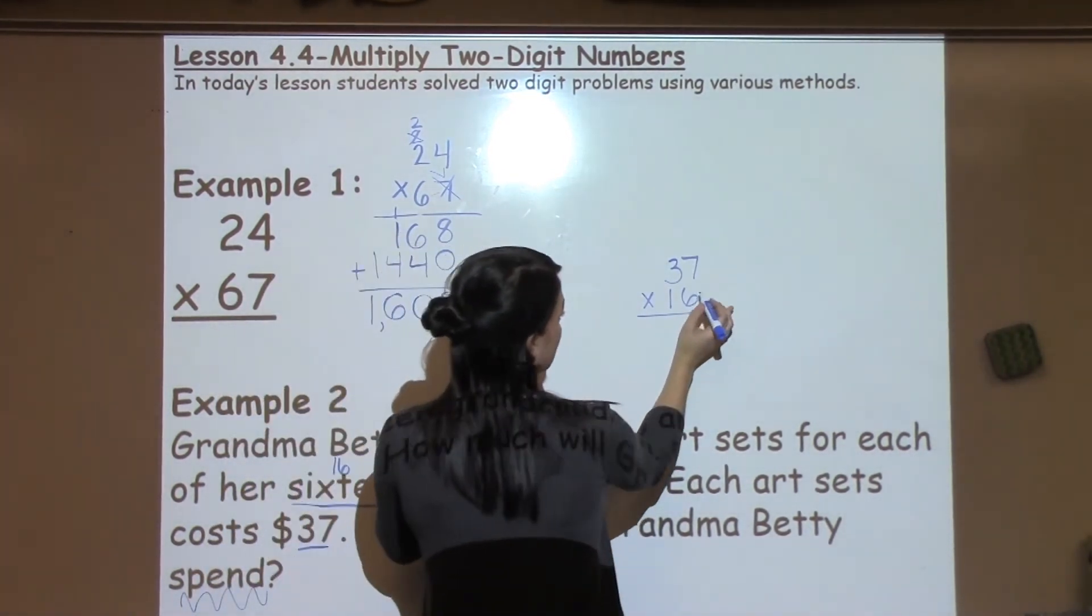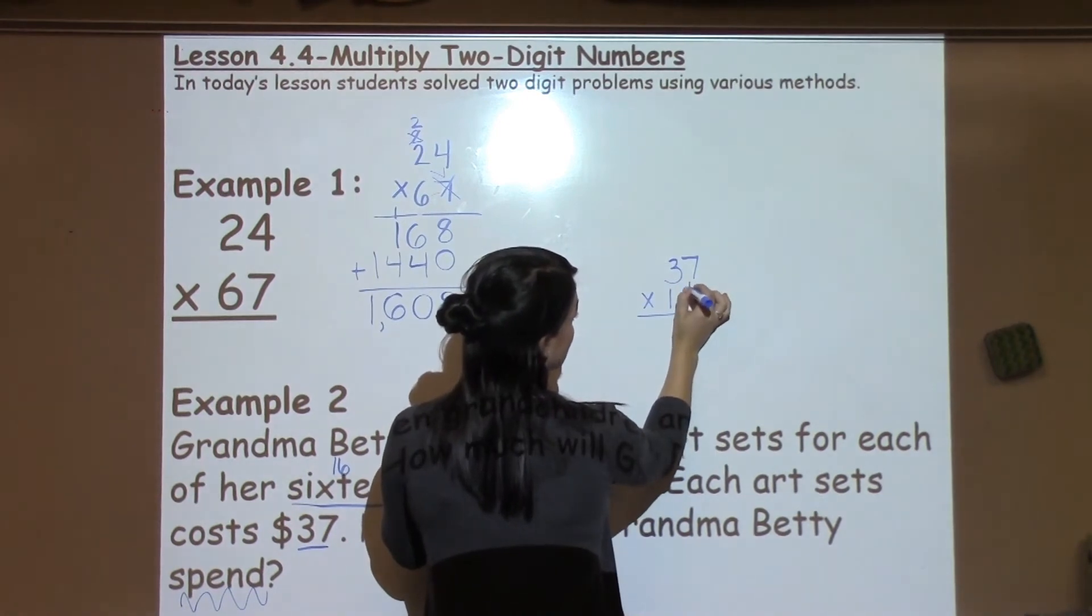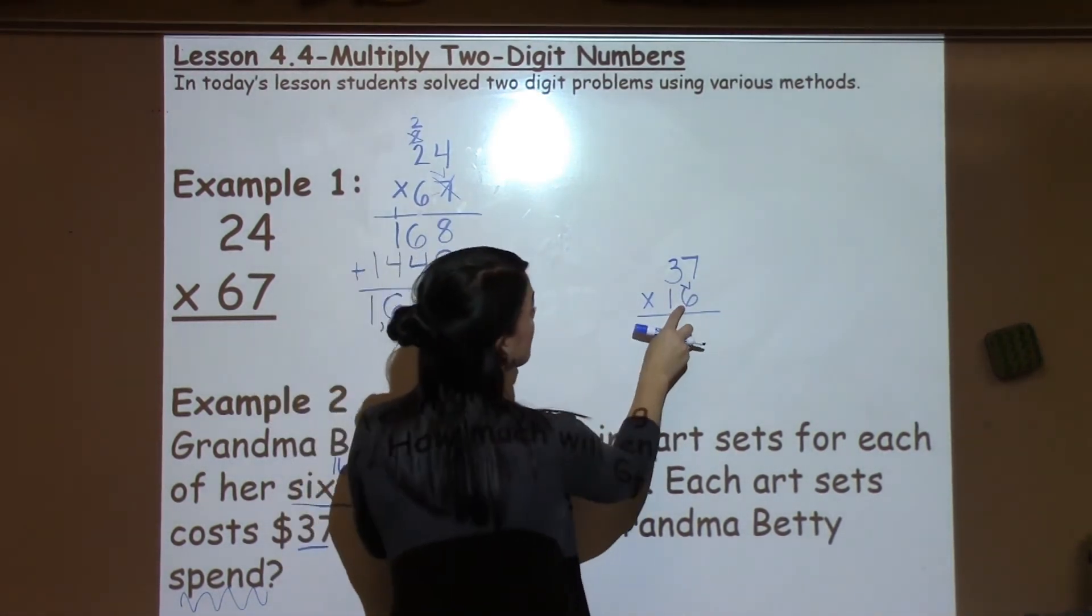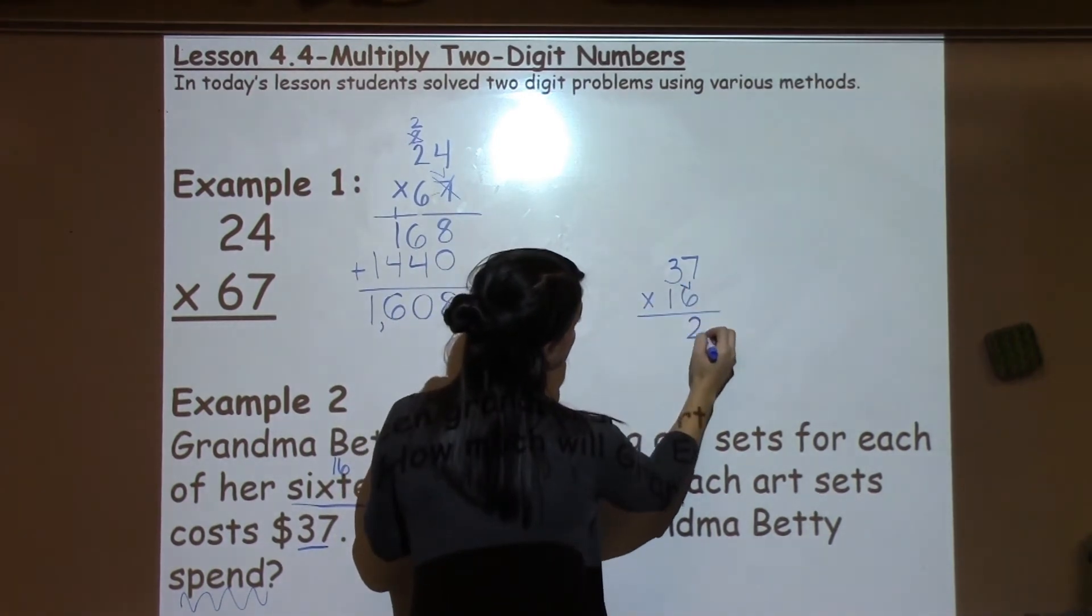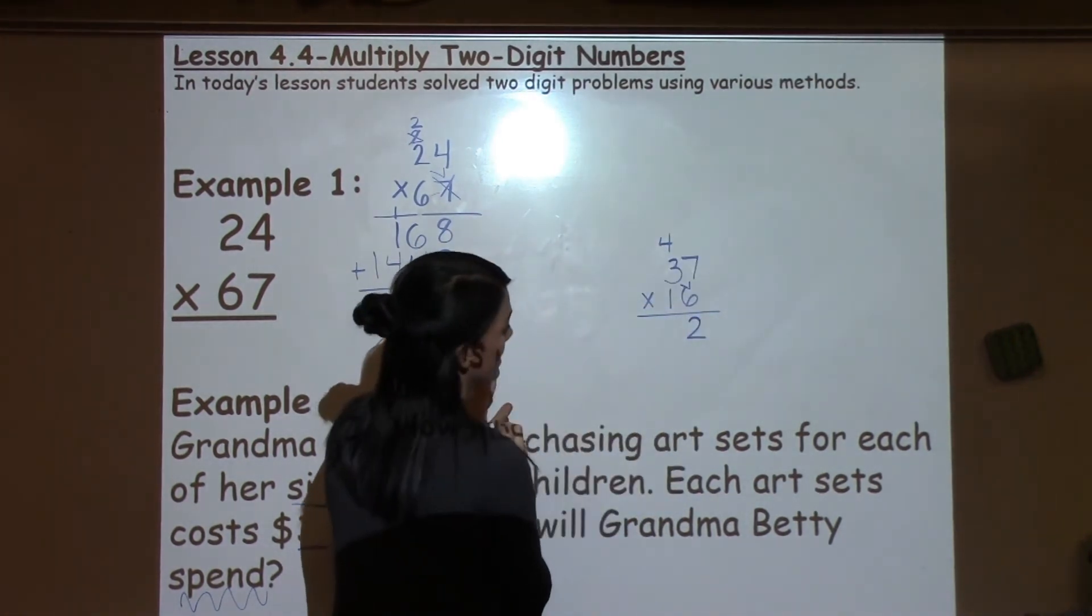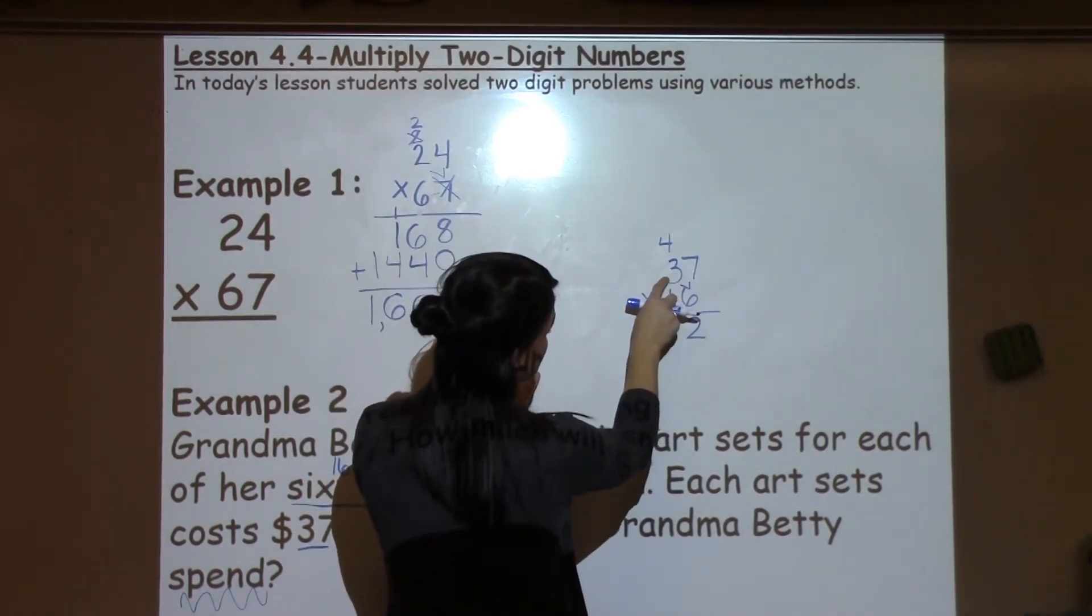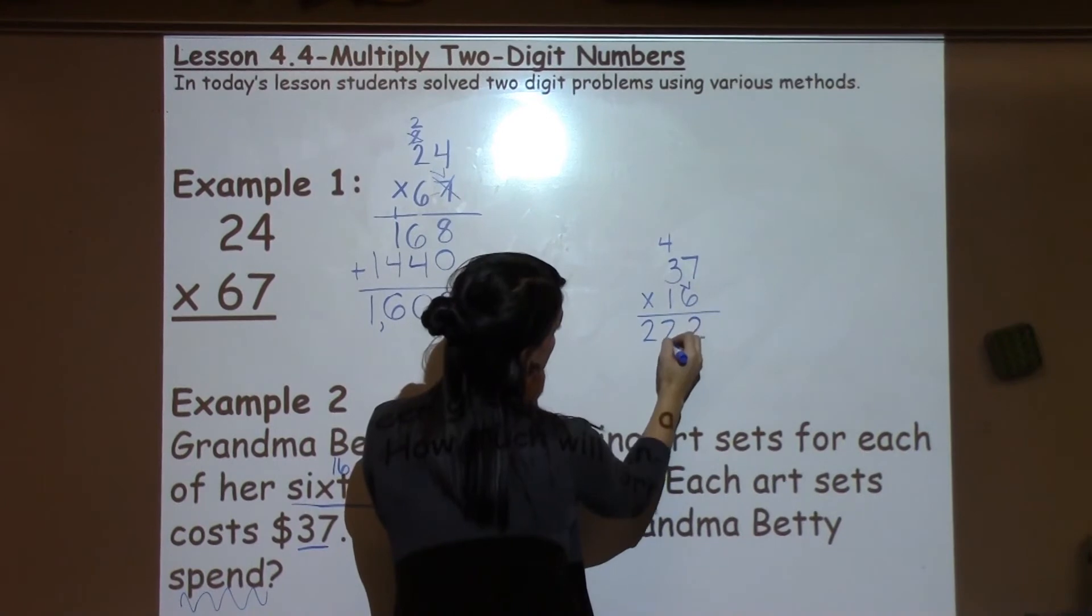So 37 times 16, I'm going to go ahead and distribute my 6 to both top numbers before I work with my 1. 7 times 6 is 42. I carry my 4 on top of the 3 to take care of next. 6 times 3 is 18 plus 4 is 22.